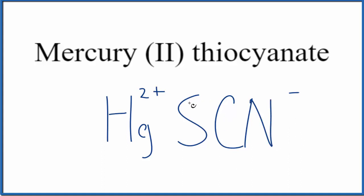We're going to need two of these here, so that 2 times the 1- will balance out the 2+. This is the formula for mercury(II) thiocyanate: Hg(SCN)2.